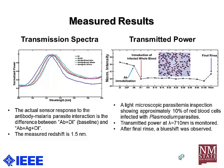We also monitor the transmitted intensity changes at fixed wavelengths — in this case, around 710 nanometers, which is the left-hand side of the EOT peak. We plot intensity changes at each step. This represents the antibody immobilization step, so we measured the transmitted power right after antibody immobilization. This is the measured response with infected whole blood. And this is the measured response after the final rinse with DI water. The actual response from antibody-antigen interaction is the difference between these two values.